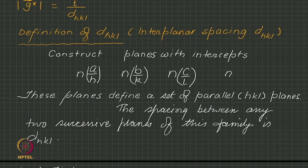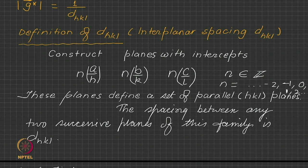n varies over all integers: from minus infinity, ..., -2, -1, 0, 1, 2, and so on. These are periodically spaced planes because the first plane makes intercept a/h on the x-axis, the next 2a/h, the next 3a/h — and the same applies on the y and z axes. In space they are periodically spaced with a fixed spacing.